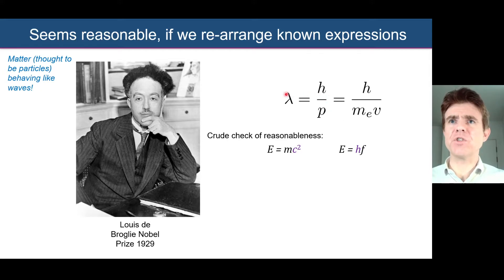Let's have a quick look at this lambda equals h over p expression. Does it make any sense at all? This is a very crude check of its reasonableness. I'm starting off here with the famous E equals mc squared expression from Einstein. On the right-hand side here, we're using the photon energy E, which is an expression for light being Planck's constant h times the frequency f. If we use E equals hf and put that into E equals mc squared, we end up with hf equals mc squared. We know that the speed of light c is equal to frequency times wavelength of light. Let's substitute for f. f is c over lambda, so we have hc over lambda now is equal to mc squared.